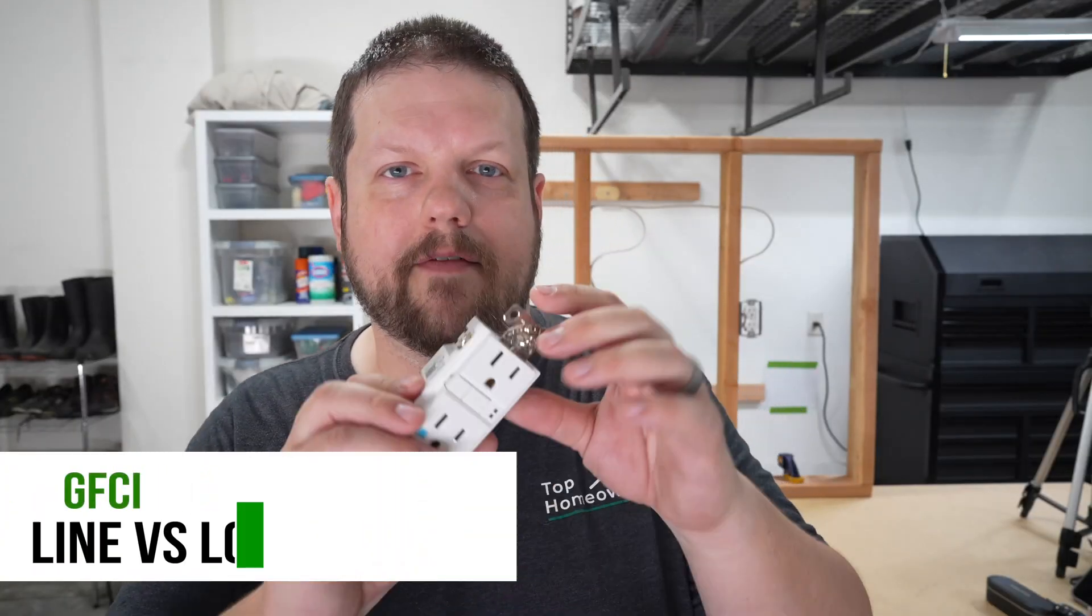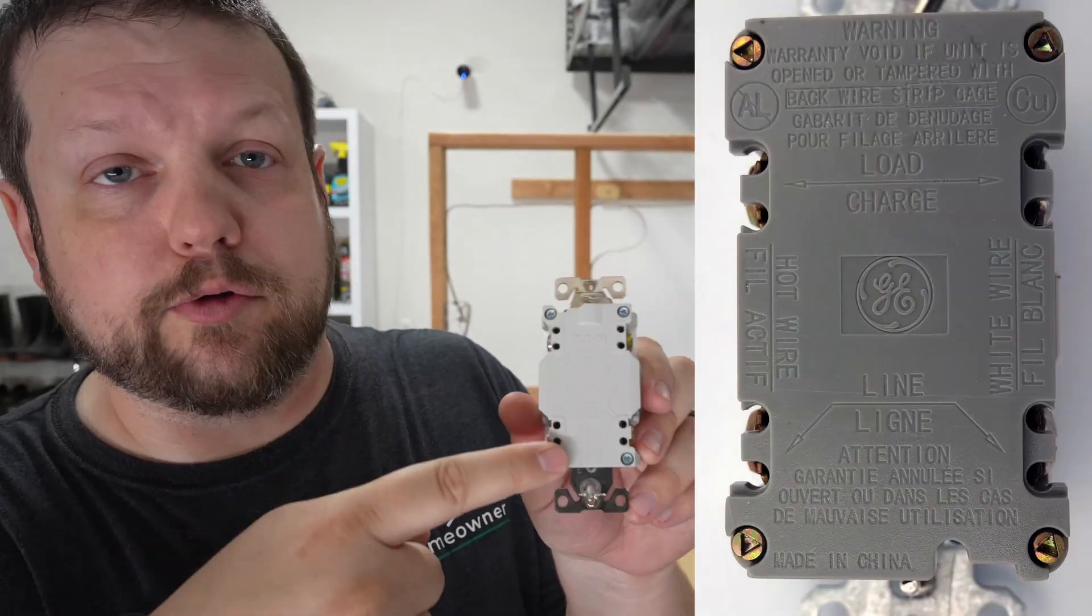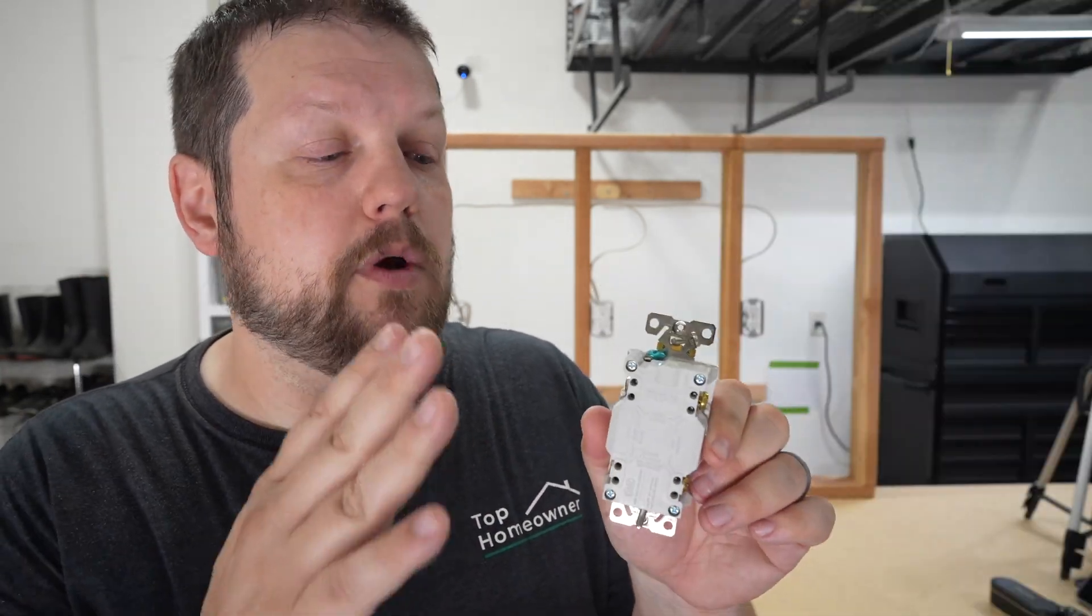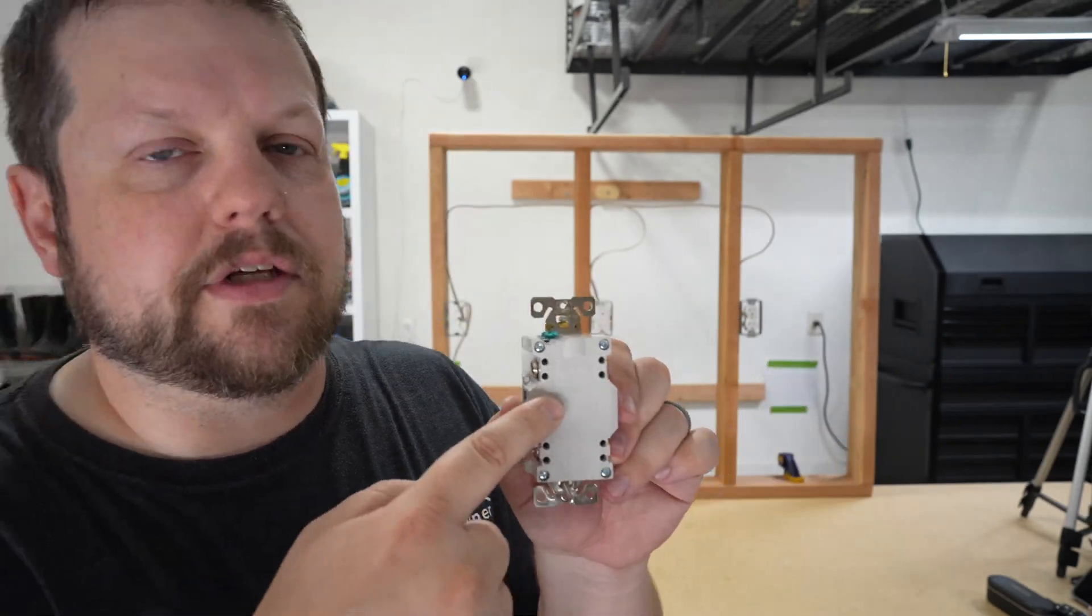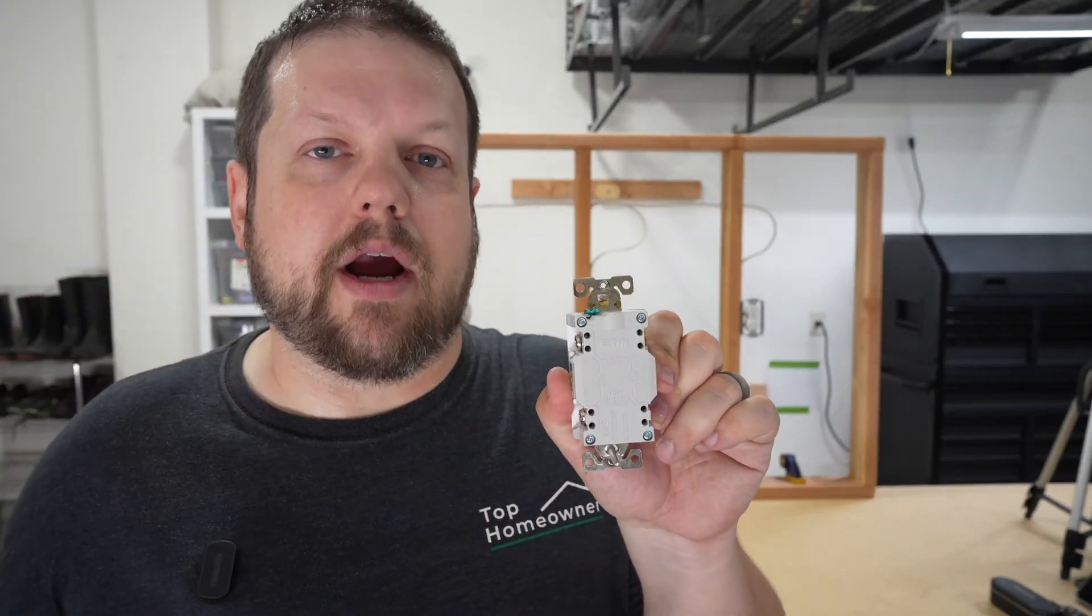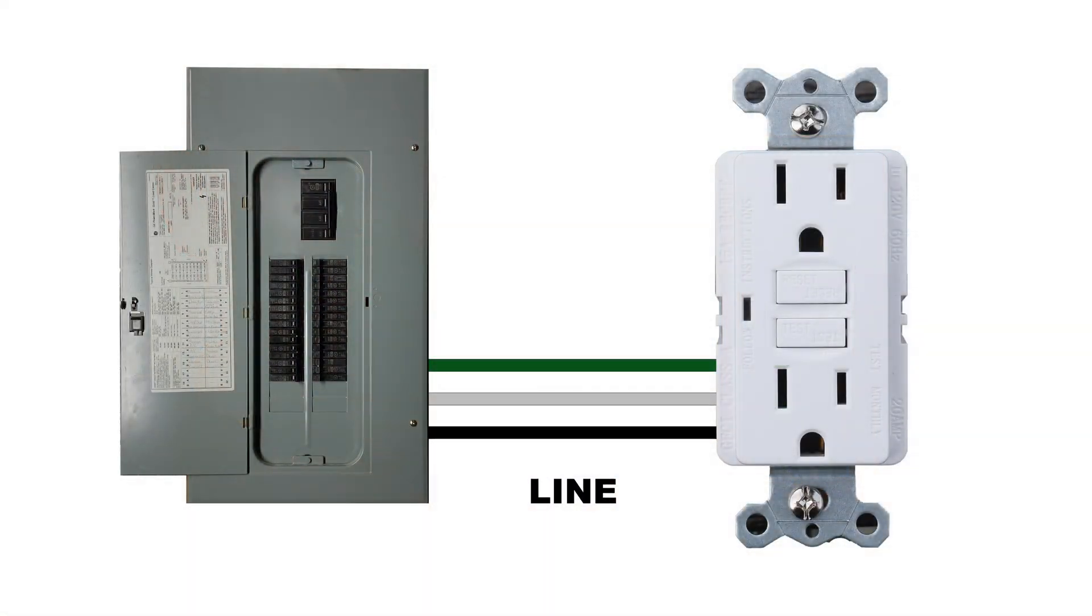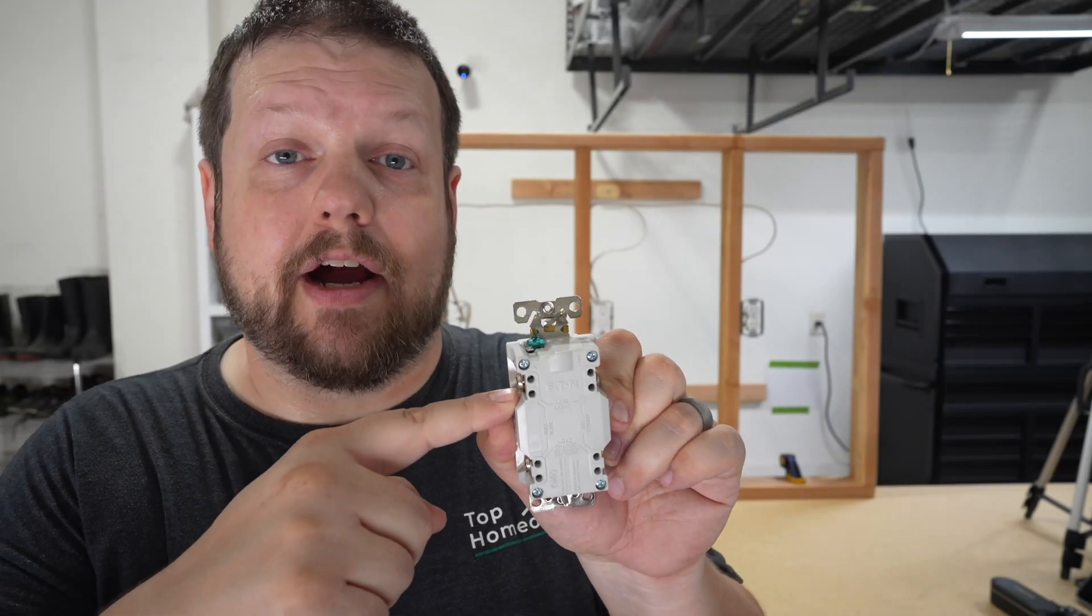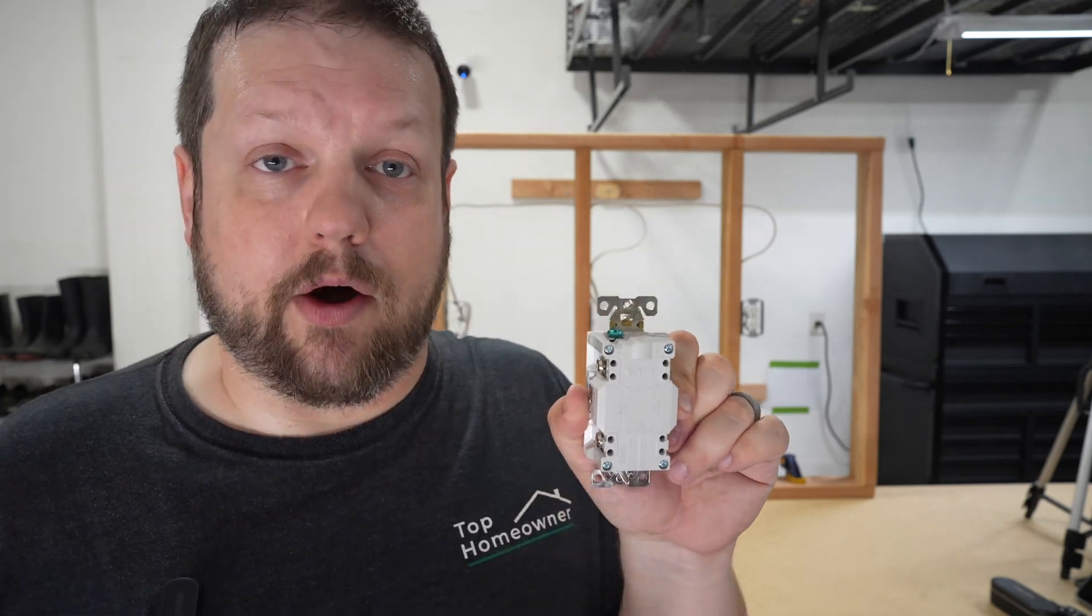You can see here I've got a typical GFCI receptacle, and on the back we've got our line terminals at the top and our load terminals at the bottom. This can vary depending on the manufacturer, so you want to be sure to check this before you install it. The line terminals are basically what you're going to use when the power comes into this outlet from the breaker box, and it has to go to this line terminal to provide protection for not only this receptacle, but other receptacles if you have it wired up that way.